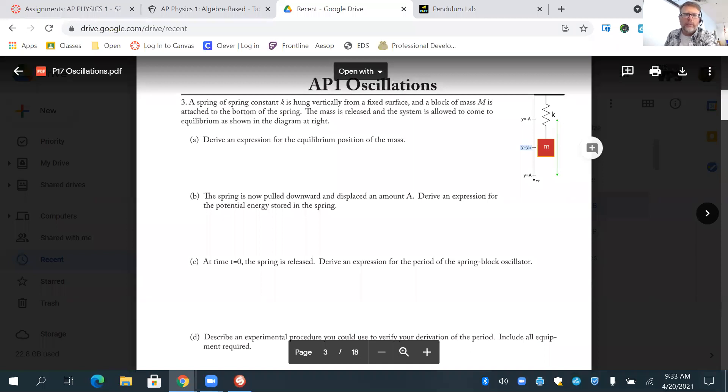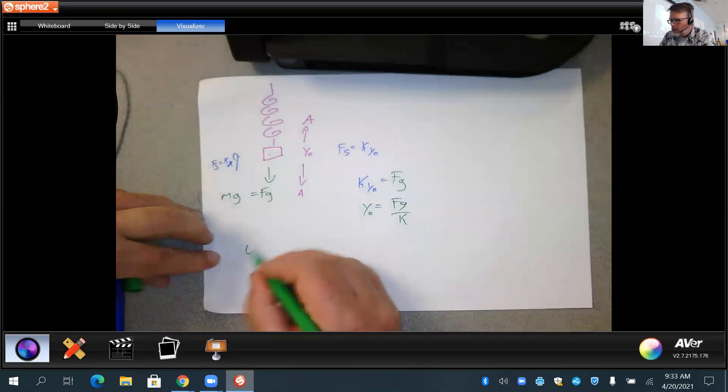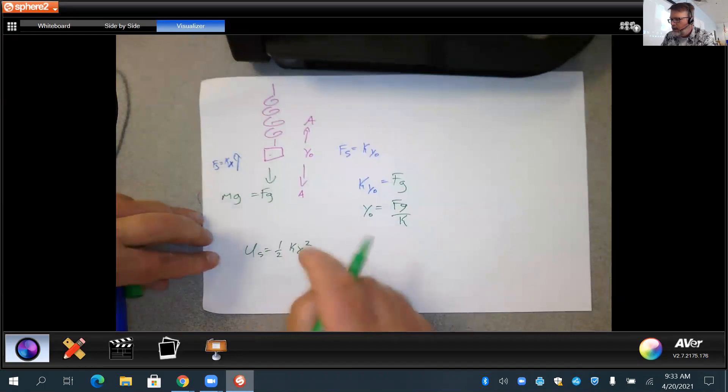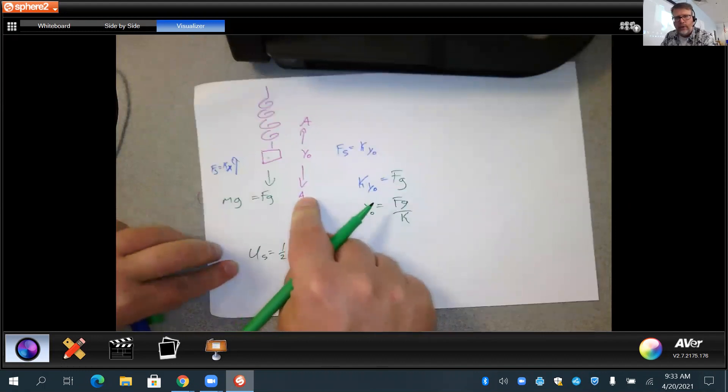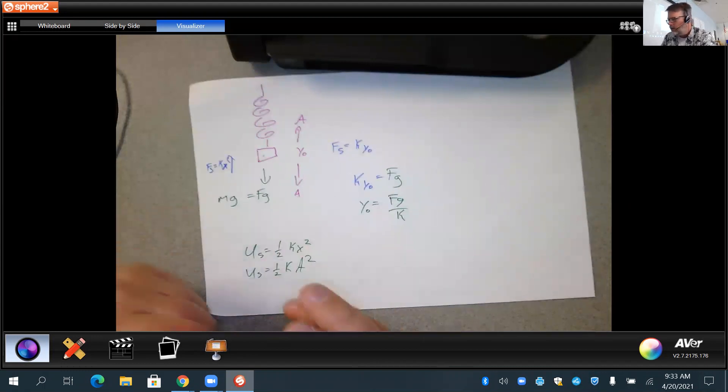All right, so now we have a spring pulled down to point A drive expression for the potential spring energy stored. So now we can just know potential is one half Kx squared, but they said it's pulled down to point A. So now we're going to just use the word derived. So again, they're using the word derived kind of superficially, but that is what they're referring to here.